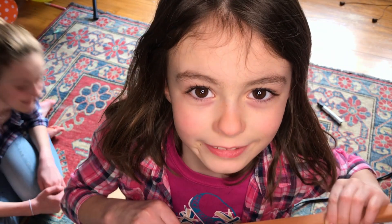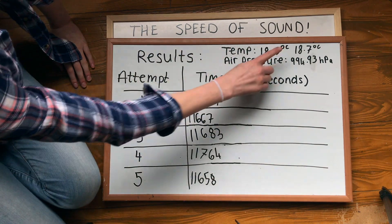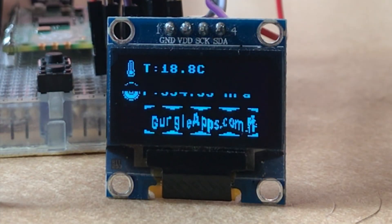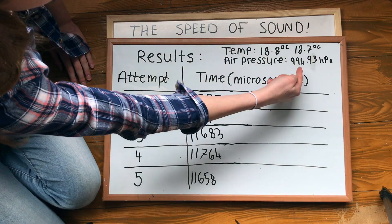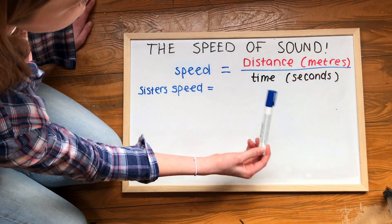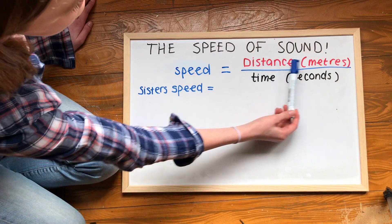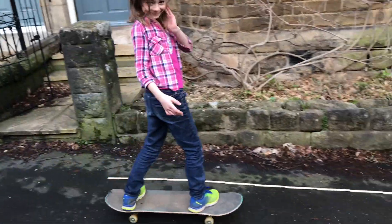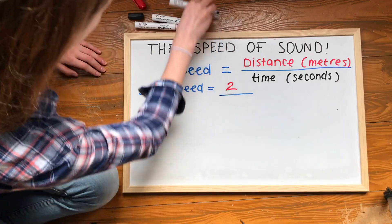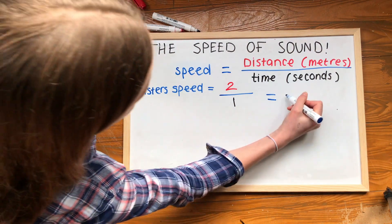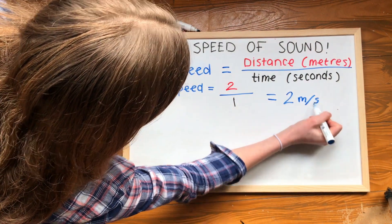Let's use our results to work out the speed of sound in this room, when the temperature is between 18.7 and 18.8 degrees Celsius, and the air pressure is 994.93 hectopascals. Speed is equal to distance divided by time. We're going to be measuring distance in metres and time in seconds. So if my sister travelled 2 metres in 1 second, her distance would be 2 metres divided by her time, which would be 1 second, and her speed would be 2 divided by 1, which is 2 metres per second.